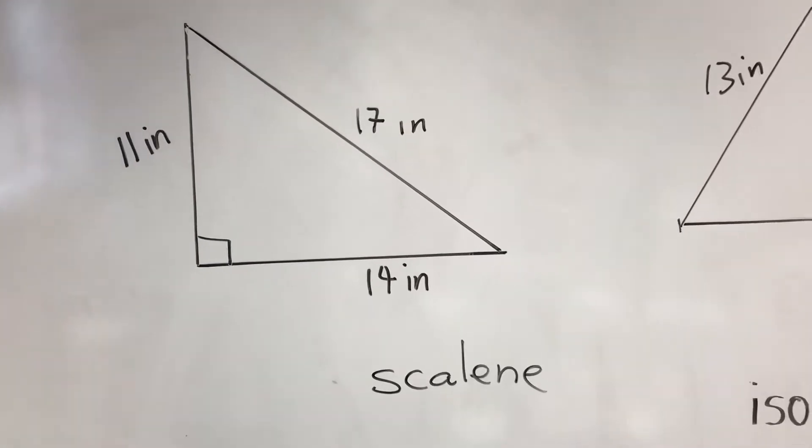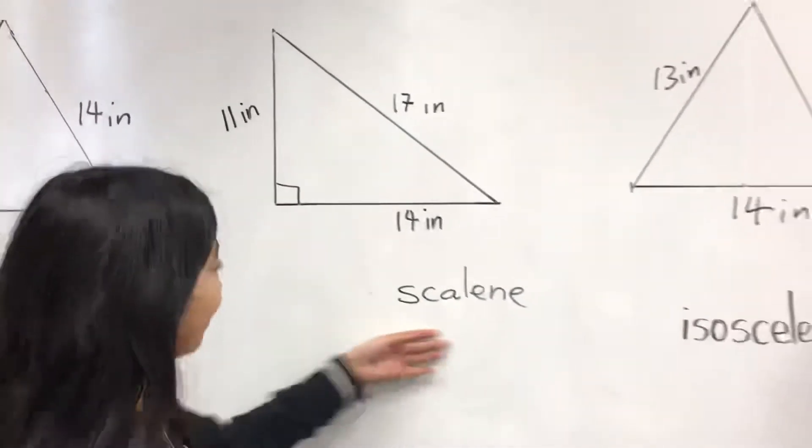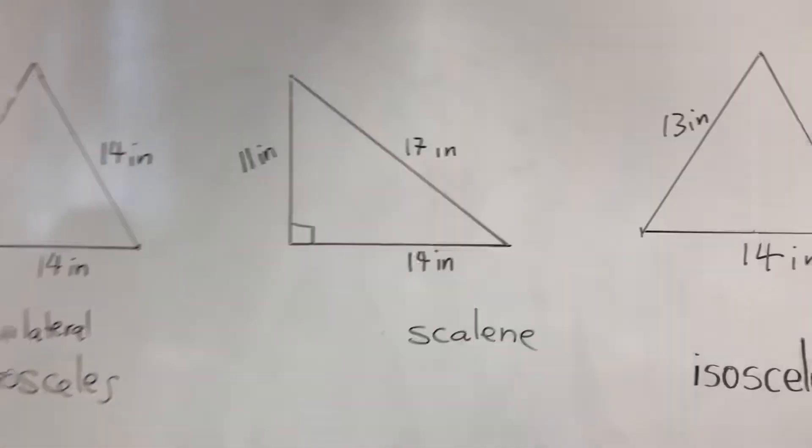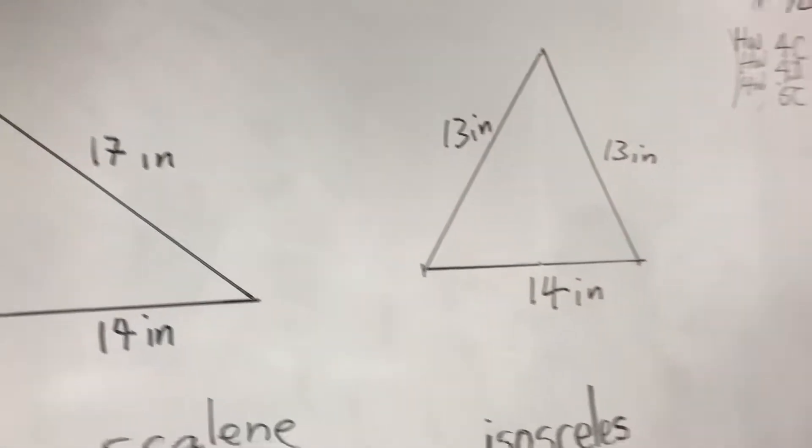And what about this triangle? This triangle is scalene because all the sides are different. Correct, all the sides are different.